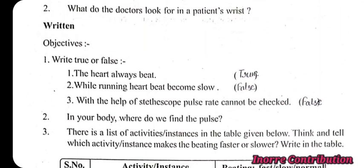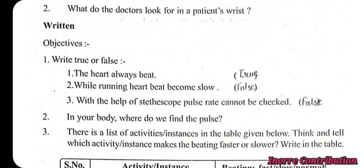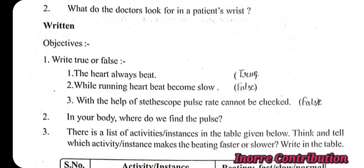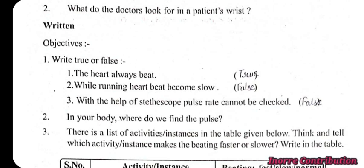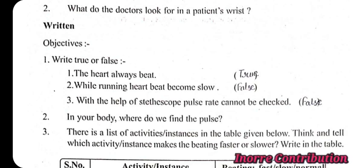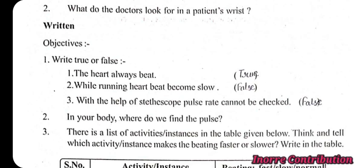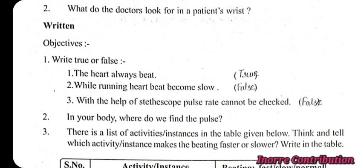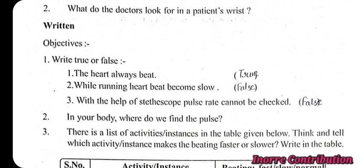Exercise — Objective. First: write true or false. The heart always beats — True. Second: while running, heartbeat becomes slow — False. Third: with the help of a stethoscope, pulse rate cannot be checked — False.